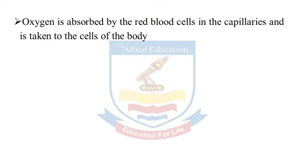Oxygen is absorbed by the red blood cells in the capillaries and is taken to the cells of the body. Alveoli se oxygen capillaries mein maujood red blood cells mein jazb ho jaati hai jo ise doosre jismani cells ki taraf le jaate hain.